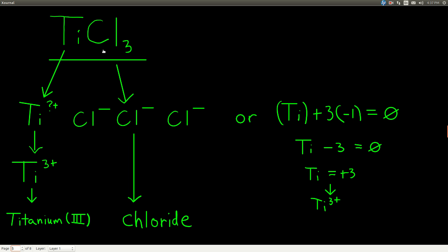Let's name this compound. Ti stands for titanium, and this is chlorine, or chloride. Titanium is a metal and chlorine is a non-metal, so we know it's a binary ionic compound. Does titanium need a Roman numeral? It's not one of the metals that only forms one charge, so yes, we do need a Roman numeral. Chloride has a negative one charge, and because we have three chloride ions, we have three negative charges total. Since there's only one titanium atom, it must bear all three positive charges, giving titanium a plus three charge. So the name is titanium(III) chloride.